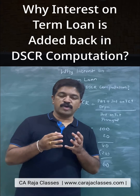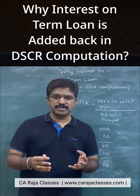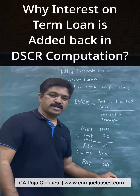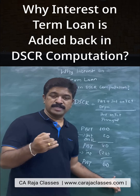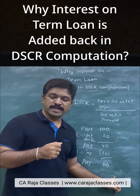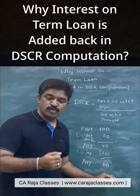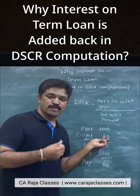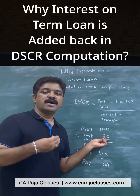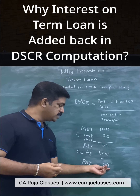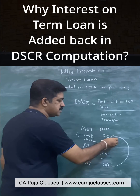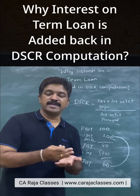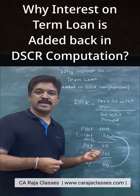Now I want to know what profit is available for servicing the interest and for paying the principal. Profit after tax is available for paying the principal. But what profit is available for paying interest? Should I take profit after tax again? No, because this is after paying interest — interest on term loan has already been subtracted. So if you want to know what profit is available for paying interest as well, you add back 20 to the profit after tax: 60 plus 20 equals 80. That is the profit available for meeting the interest, and that is the reason we add back interest on term loan.